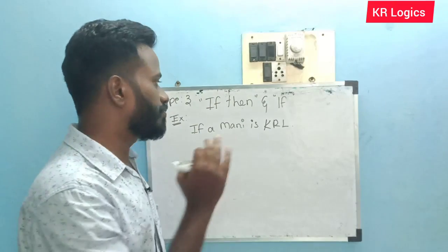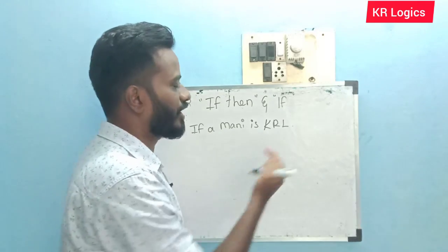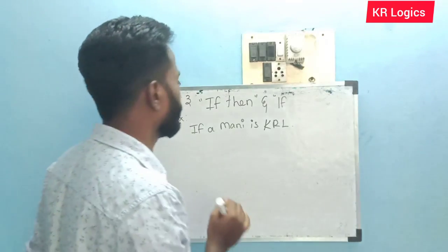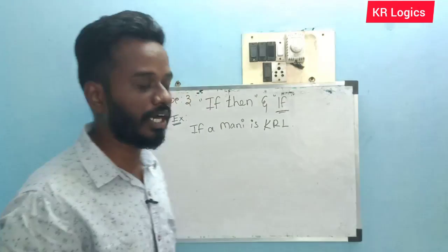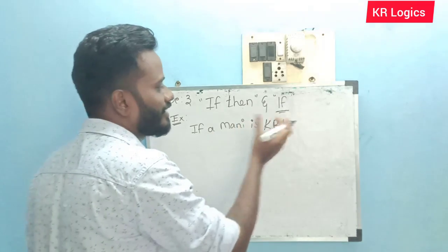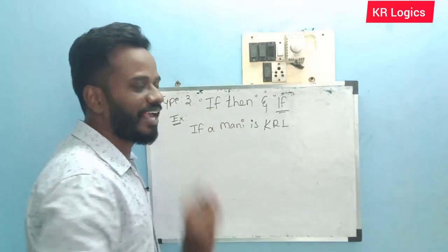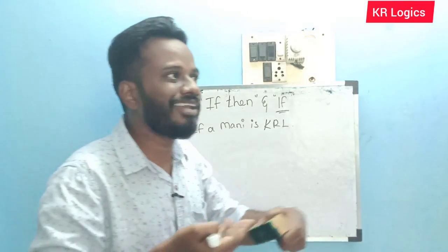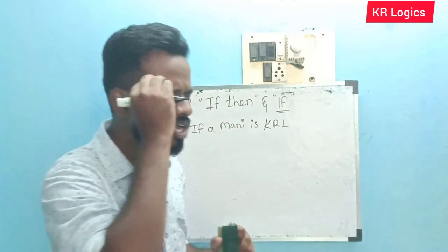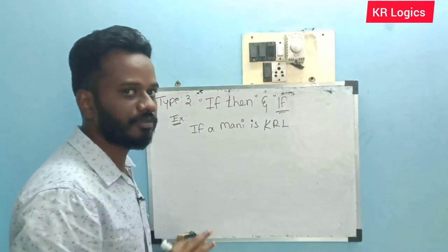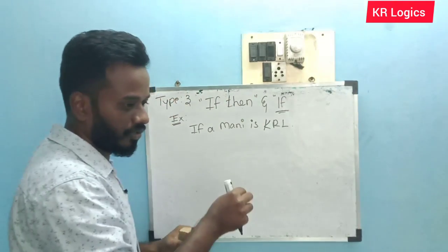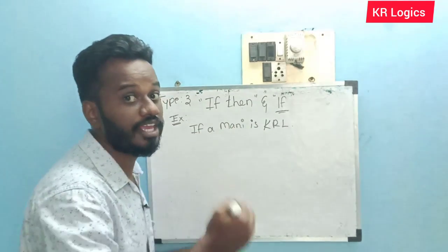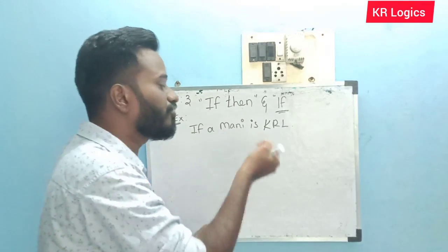Type 3: we have to know 'if-then.' If-then, if-then. For example: 'If money is KR, then money is KR.' Just think — if money is KR, just translate. The money is also in KR Logics. If you say money, then you will have KR Logics. If it is 'and,' that's when it is 'and,' then you will have KR Logics.